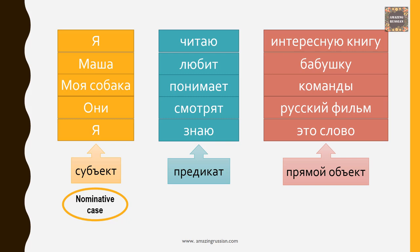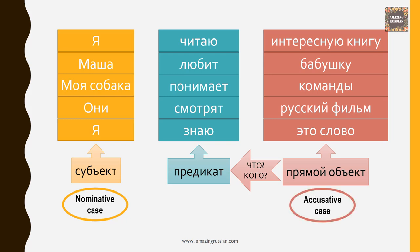Интересную книгу, бабушку, команды, русский фильм, это слово — это прямой объект. It answers the question: что? кого? Читаю что? Интересную книгу. Любит кого? Бабушку. Прямой объект is always in the accusative case — винительный падеж.